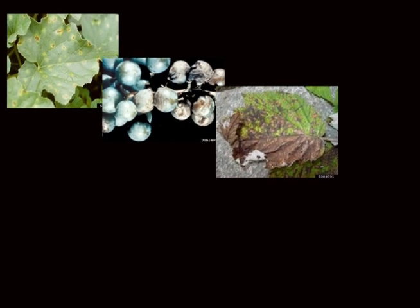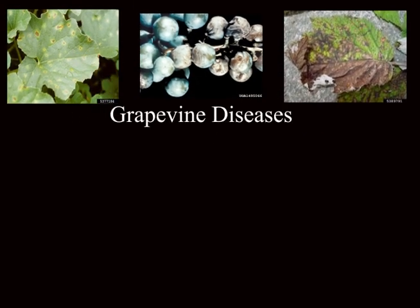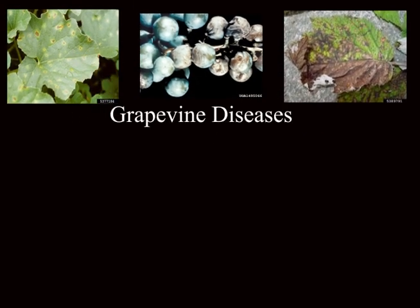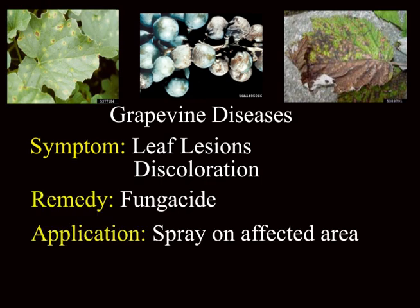If your vineyard grapes are suffering from some kind of disease, you will see leaf lesions and discoloration. If you see a thin film-like coating on the leaves of your plant, it's usually a fungus that will cause this.